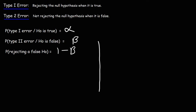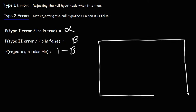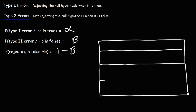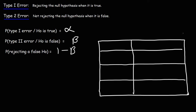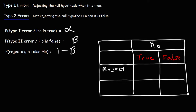Now what we're going to do is make a table that summarizes all of this. So here we have H0, the null hypothesis, and there are two possibilities: either H0 is true or it's false. We can't control that. What we can control is our decisions — we can choose to reject the null hypothesis, or we can fail to reject it, which means we accept it.